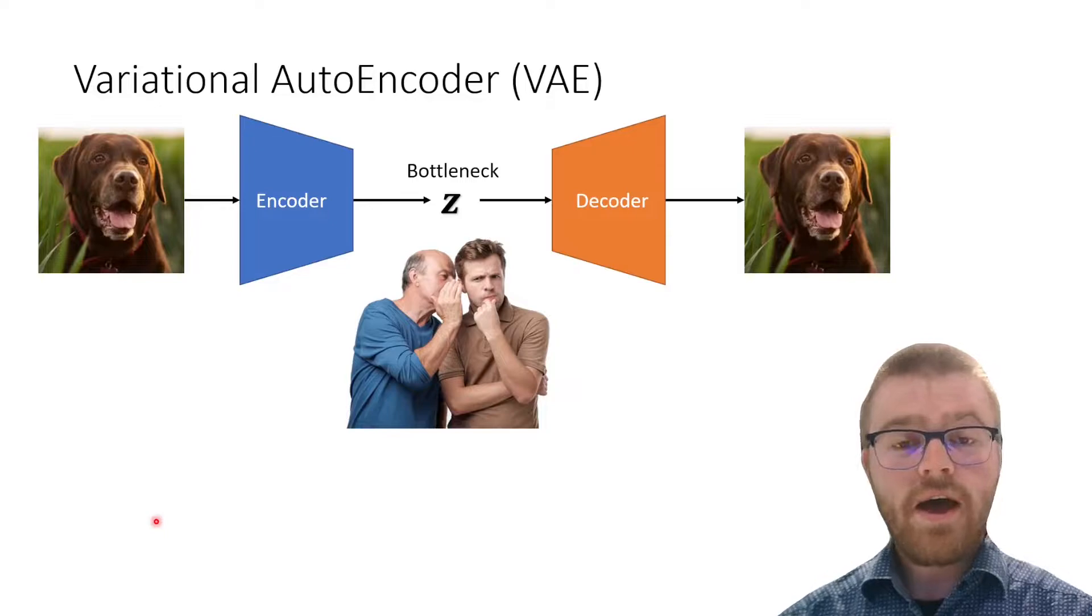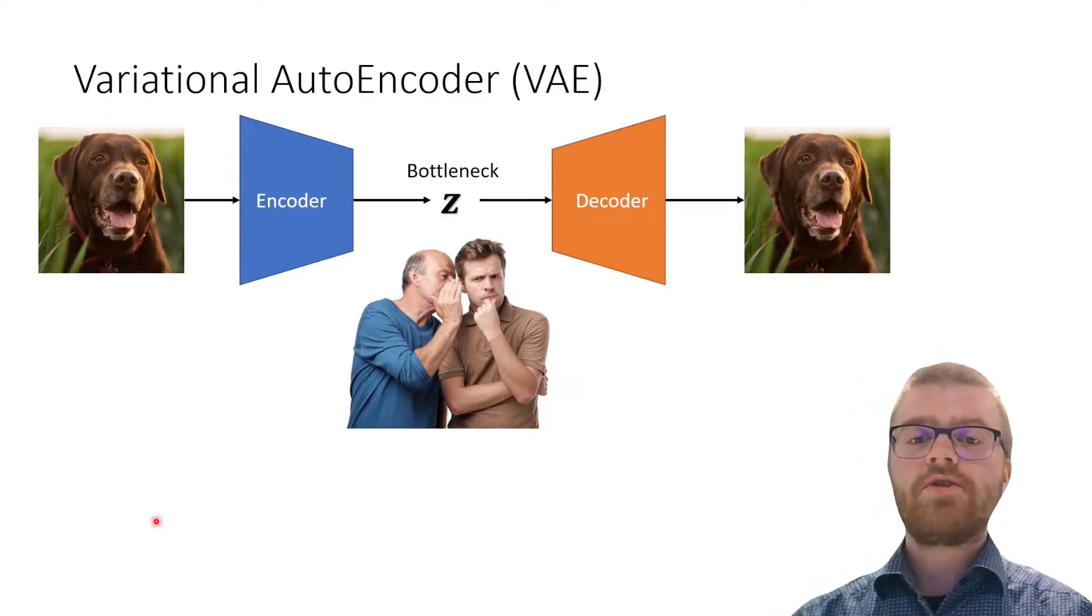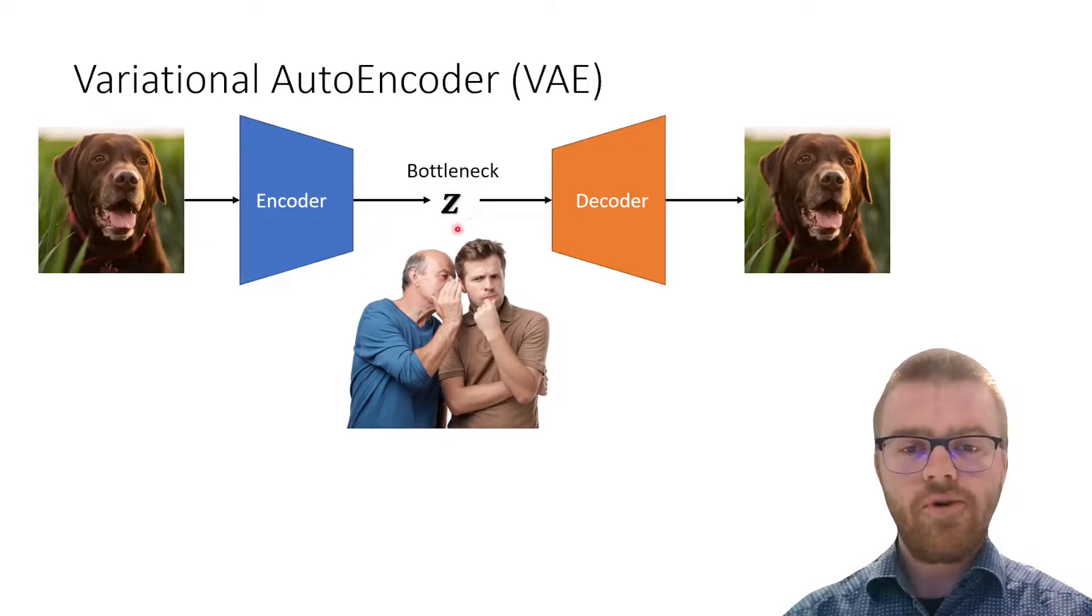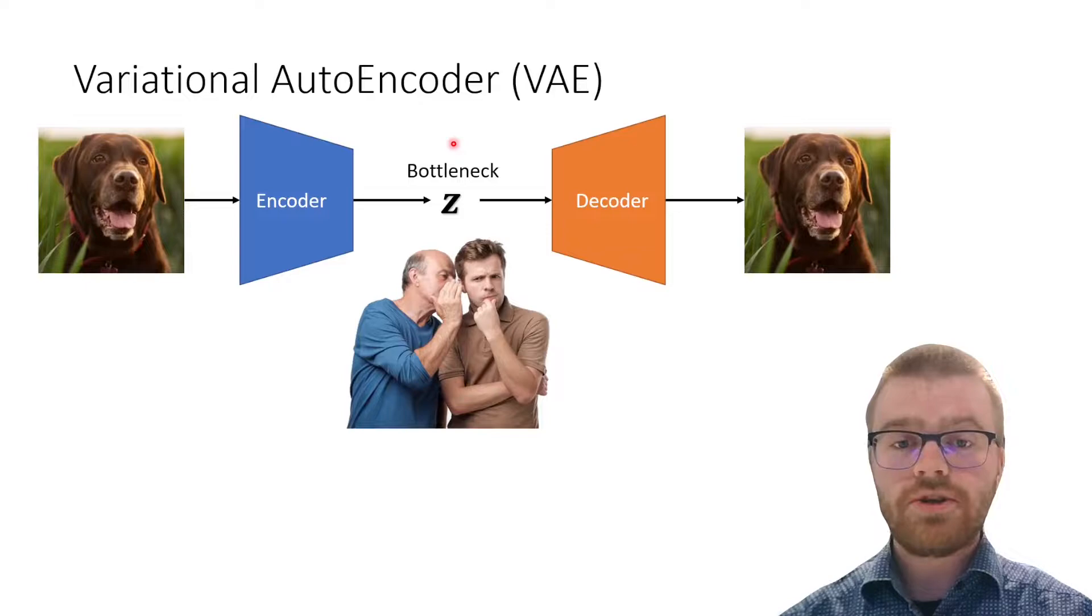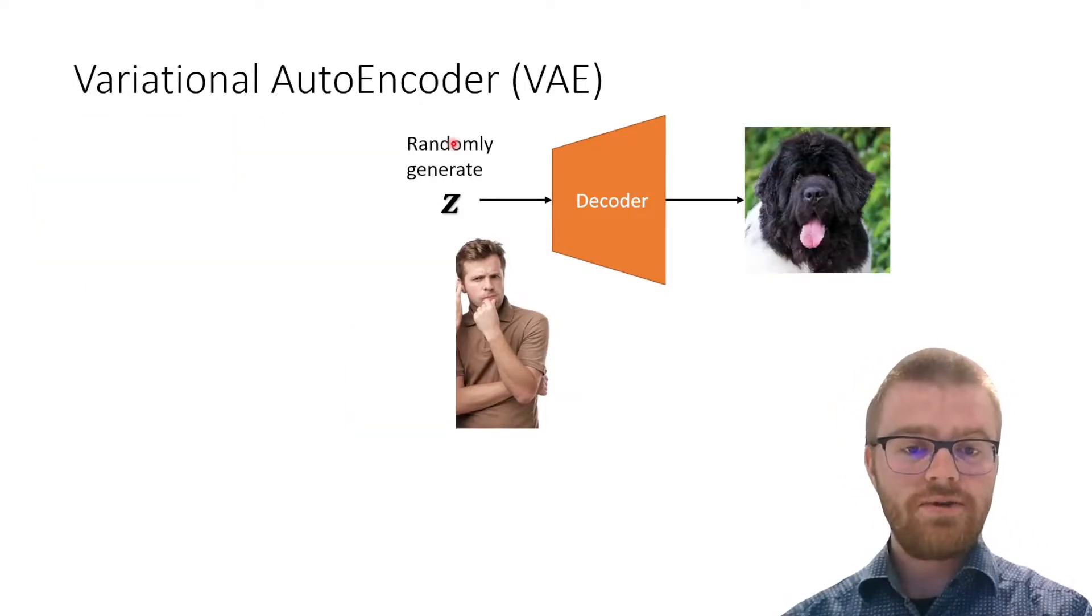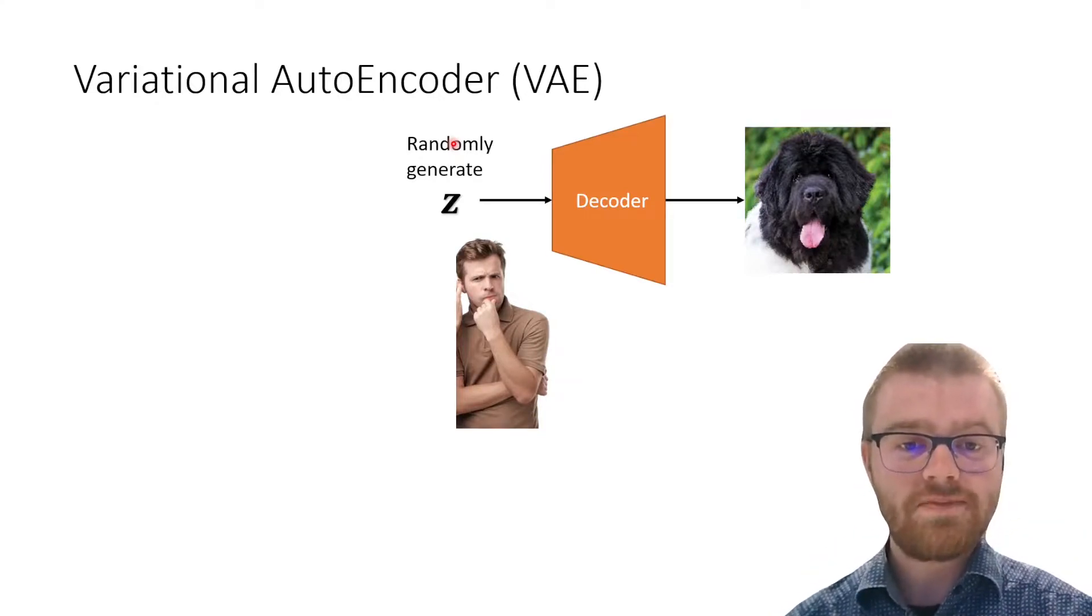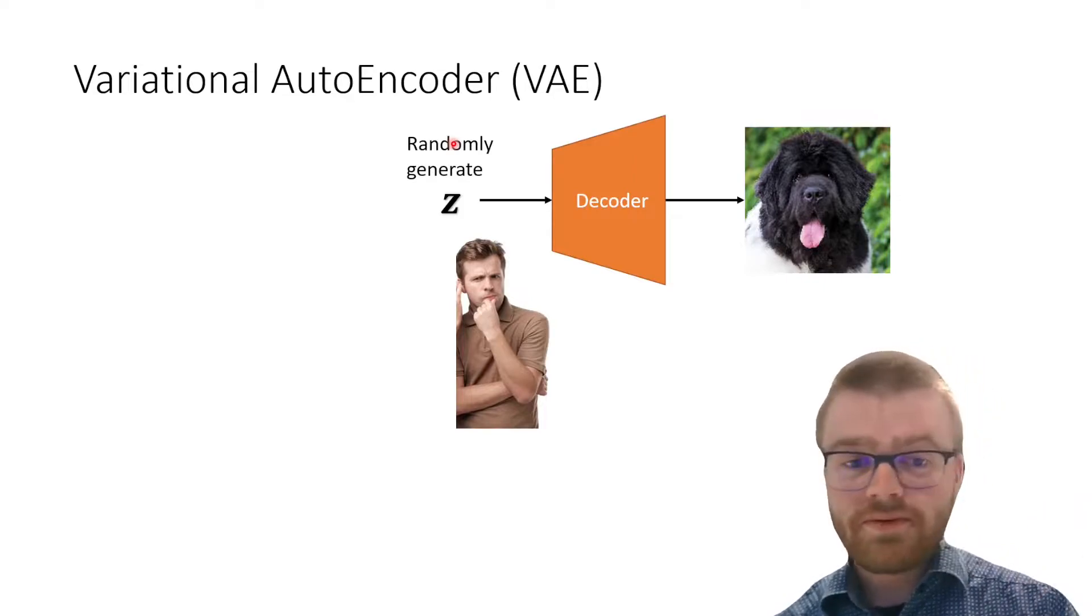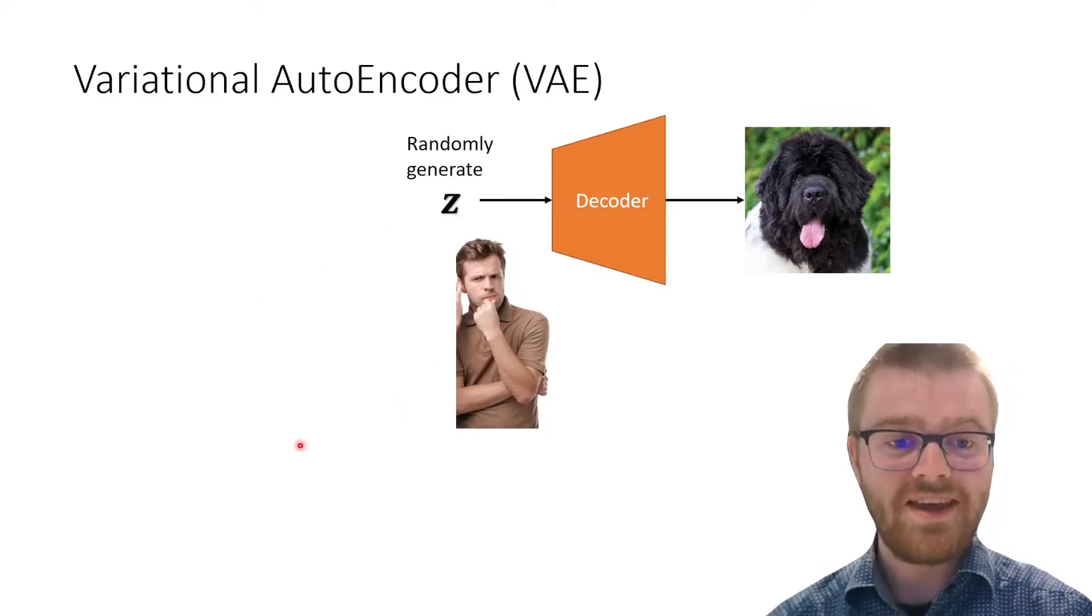As opposed to a normal autoencoder, in a variational autoencoder, we are going to enforce this bottleneck to follow some probability distribution. And if we do that good enough, we can then drop the encoder and sample from this probability distribution in the latent space and dream up or generate completely new outputs. So we don't even need this encoder anymore in the end.